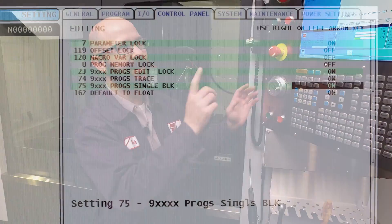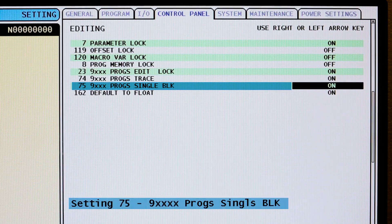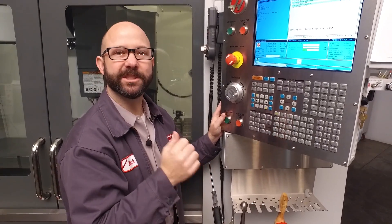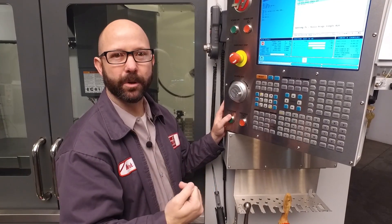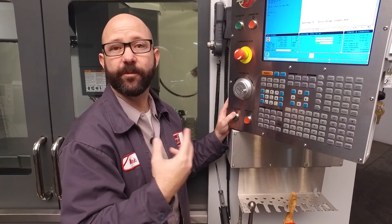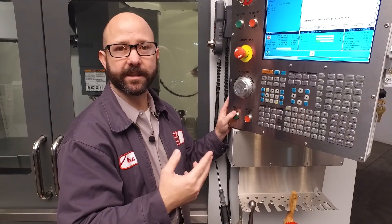Before we let you go, we want to show you a couple settings that can help when using single block. Setting 75 is our 9,000 programs single block setting. When this is set to on, you can single block through your 9,000 sub programs. That's your probing macros and your G47 engraving cycles, things like that.